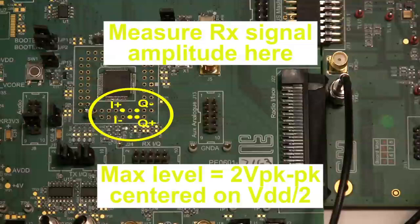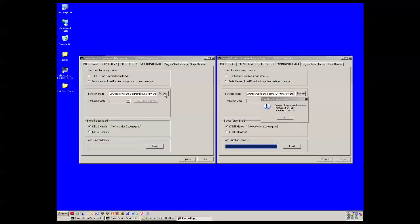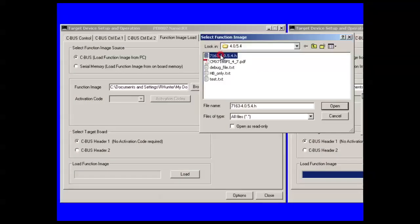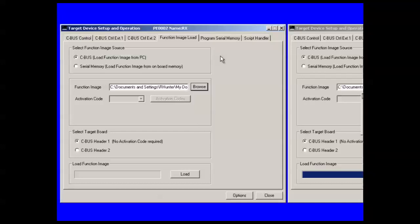The constellation diagram will rotate if there is a frequency error between the transmit and the receiver. In order to view the constellation diagram, let's minimize that frequency error as much as possible. Launch two PE triple O2 graphical user interfaces, one for transmit and the other for receive. Load the latest function image into each CMX 7163.